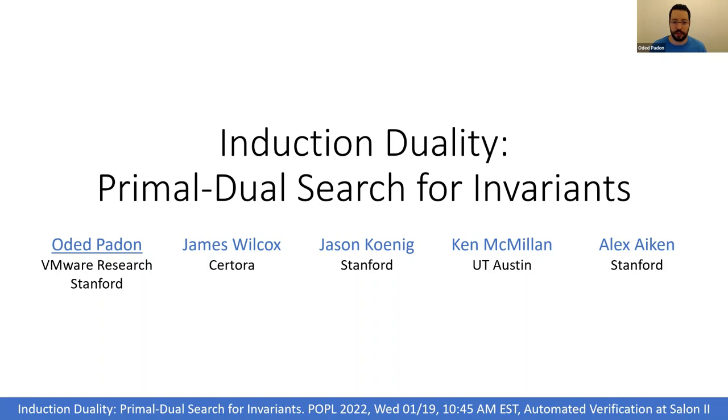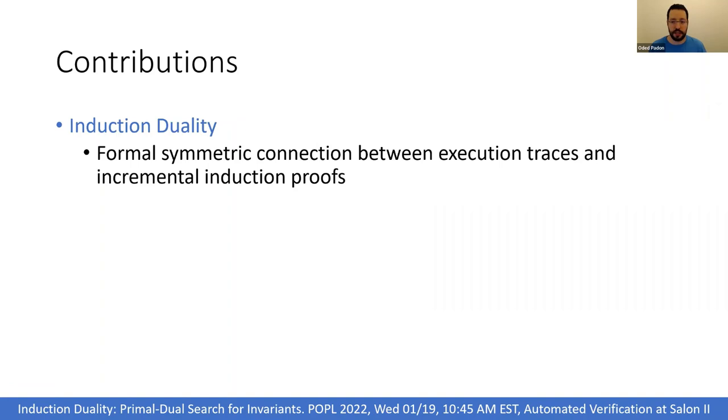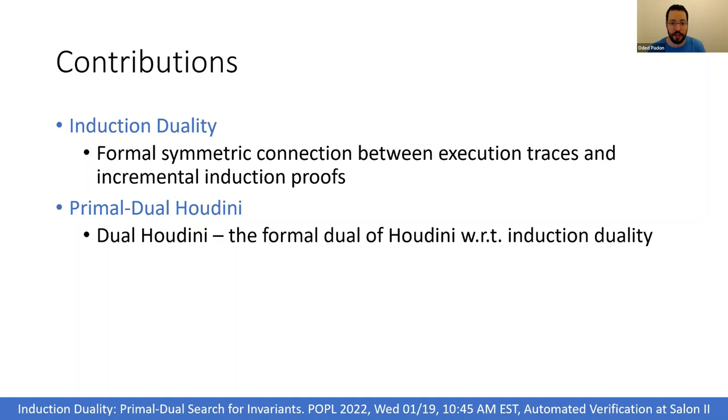The main contributions of this work are first induction duality, which is a new mathematical connection between execution traces and incremental induction proofs that is surprisingly symmetric, and second primal-dual Houdini, which we obtain by first taking the dual image of the well-known Houdini algorithm under the new induction duality and then combining it with the original Houdini algorithm to obtain a primal-dual invariant inference algorithm.